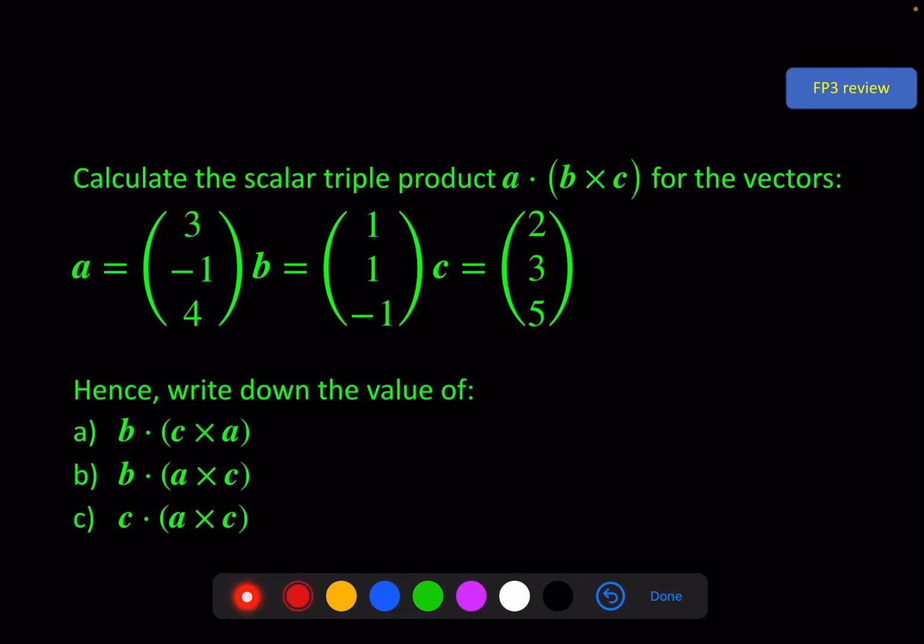Calculate the scalar triple product a · (b × c). So we need b × c first and then we'll dot that with a.